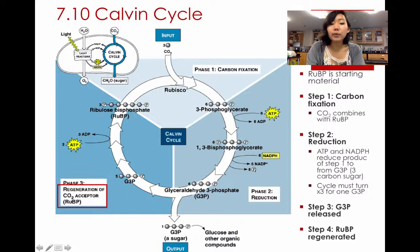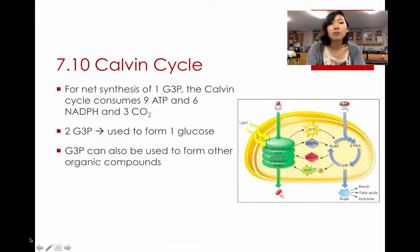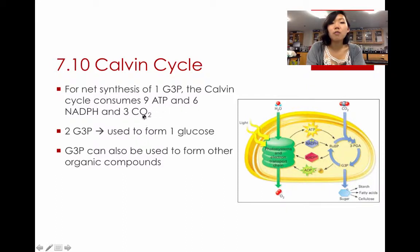After we release that, we want to regenerate our starting material, which is RuBP. So step four is just the regeneration of RuBP, and you're going to use some ATPs to do that. In summary, for the net synthesis of one G3P, the Calvin cycle consumes nine ATPs, six NADPHs, and three carbon dioxides. So those are all the inputs needed for one G3P.